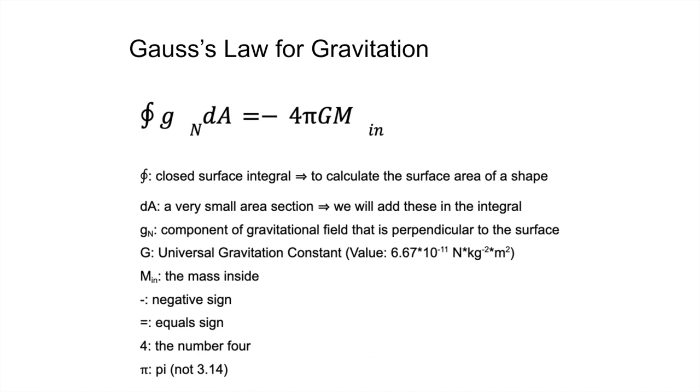Then there is G sub n, which is the component of gravitational field that is perpendicular to the surface. Then we have the universal gravitation constant. This is the same thing that appears in Newton's law of gravity. Then we have the mass inside. We have a negative sign. We have an equal sign. We have the number 4. And we have pi. It is not 3.14 or 3.1415. It is pi.